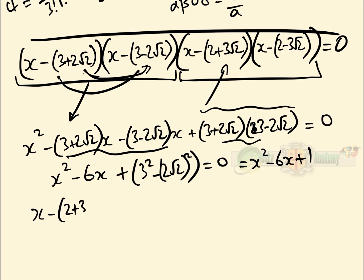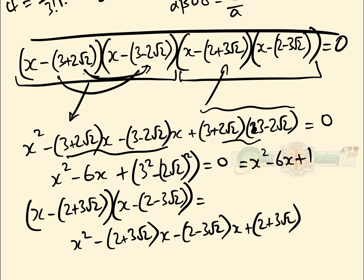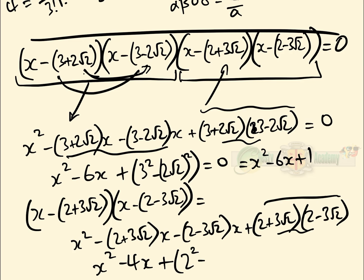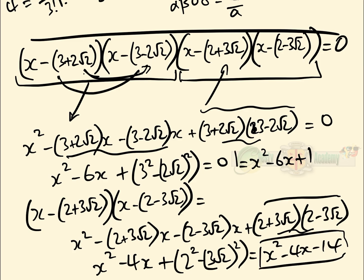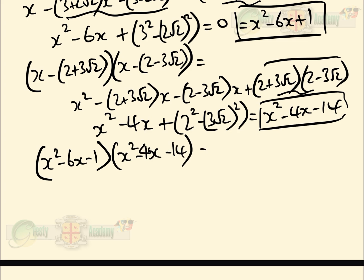The second pair: (x - (2+3√2))(x - (2-3√2)) gives x² - 4x + (2²-(3√2)²) = x² - 4x + (4 - 18) = x² - 4x - 14. So we have our two quadratics: x² - 6x + 1 and x² - 4x - 14, and all we need to do is multiply them together, which is far easier.